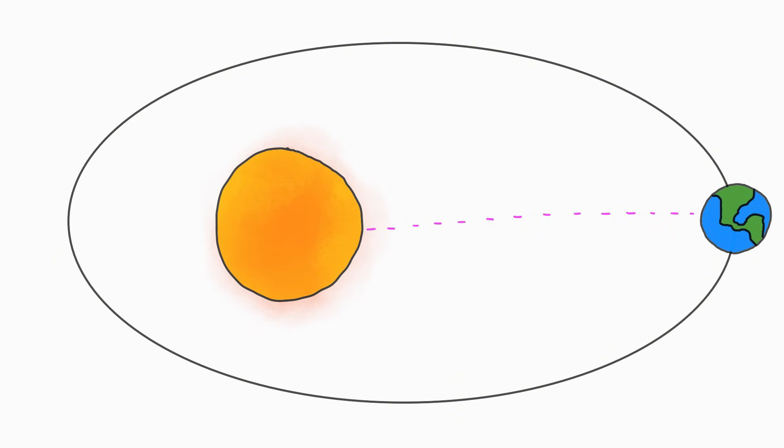To actually reach the sun, you need to cancel out Earth's orbital velocity, which means slowing down by 30 kilometers per second. Only then can your garbage rocket fall straight into the sun.